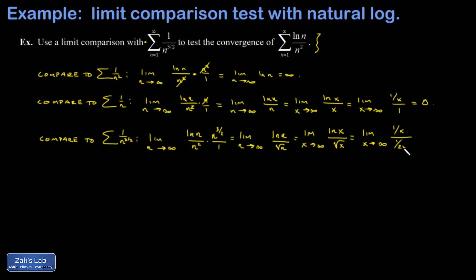So I multiply by the reciprocal of that denominator. And I get 2 root x over x. Well, x is just square root of x squared, so I cancel the square root x. And I get 2 over root x. And now this clearly goes to 0.